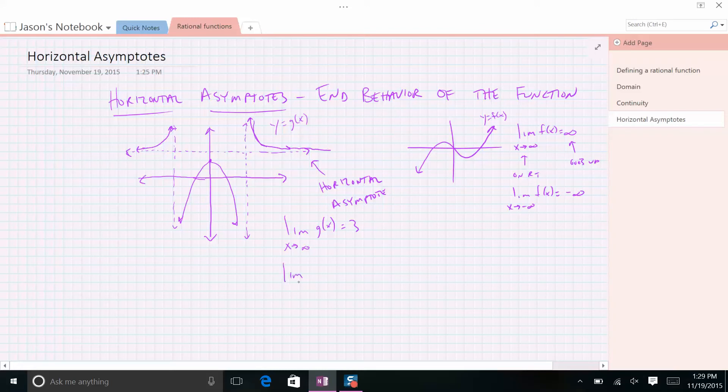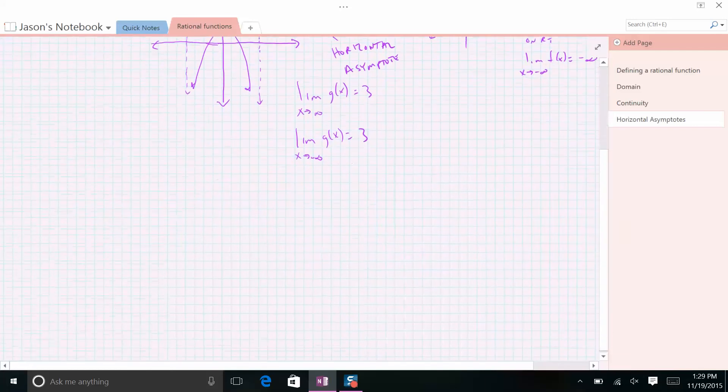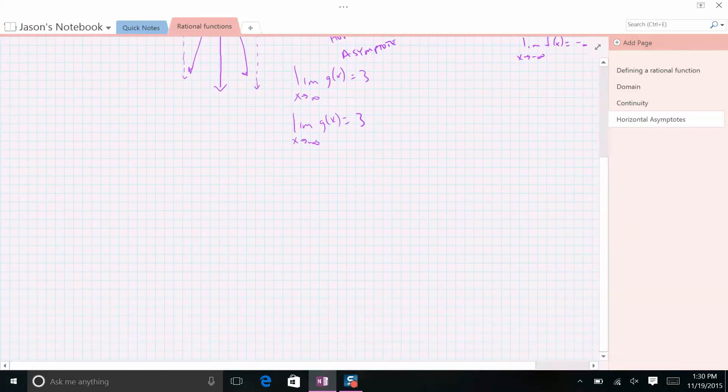And the limit as x approaches negative infinity, as I go further and further left, it's also approaching 3. That's because the horizontal asymptote is a horizontal line with equation y equals 3. We're going to focus on how do we find that line, that horizontal asymptote, given a rational function.